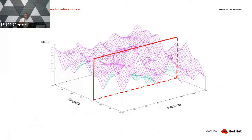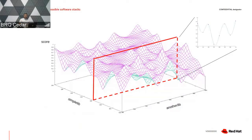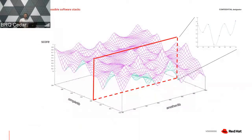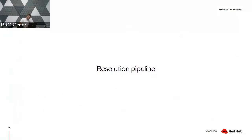Now, let's say that we pin SimpleLib to some specific version and check what versions of AnotherLib can be installed. In that case, we are basically mapping this to a two-dimensional space where the x-axis corresponds to versions of AnotherLib and the y-axis is the score. This function tells us how the software behaves when we have SimpleLib in a specific version and we are changing AnotherLib versions, or possibly different builds of AnotherLib.